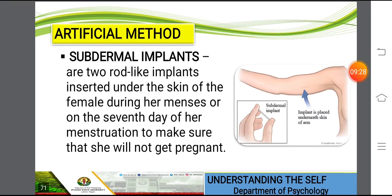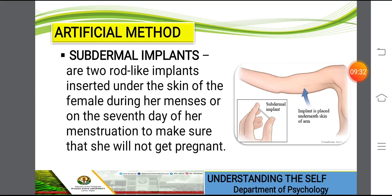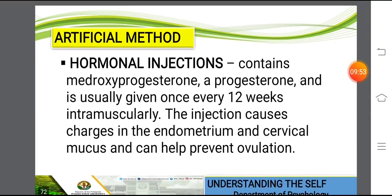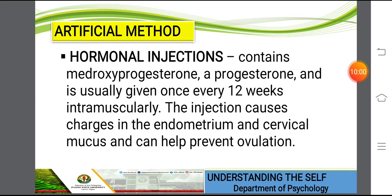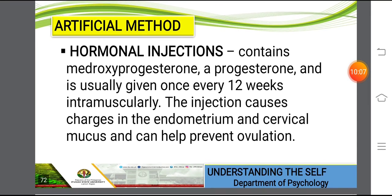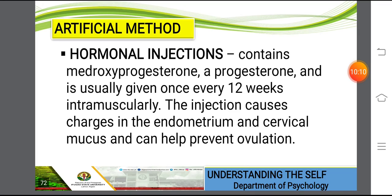Subdermal implants are two rod-like implants inserted under the skin of the female during her menses or on the seventh day of her menstruation to prevent pregnancy. You can see in the illustration that the implant is placed underneath the skin of the arm. Another method is the hormonal injection, which contains medroxyprogesterone and is usually given intramuscularly once every 12 weeks. The injection causes changes in the endometrium and cervical mucus and can help prevent ovulation.